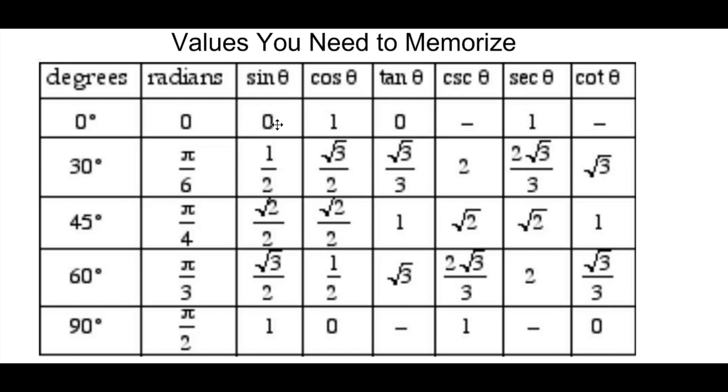Sine of 0 is 0. Sine of pi over 6 is 1 half. Sine of pi over 4 is root 2 over 2. Sine of pi over 3 is root 3 over 2. And sine of pi over 2 is 1.